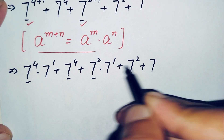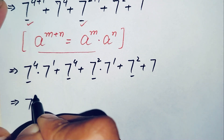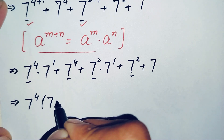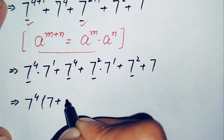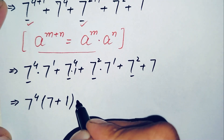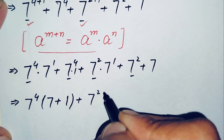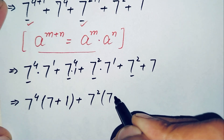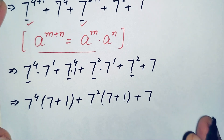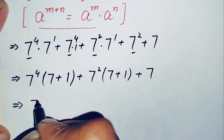From the first and second terms we take seven raised to power four as a common factor, leaving seven plus one inside the bracket. From the third and fourth terms we take seven raised to power two as a common factor, leaving seven plus one inside the bracket.